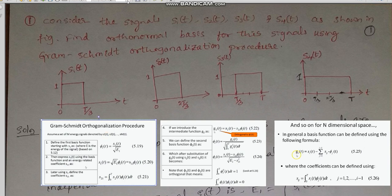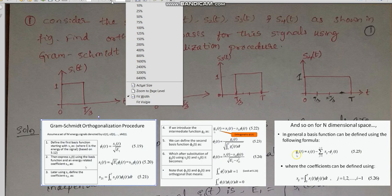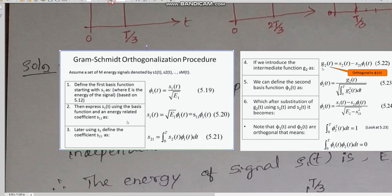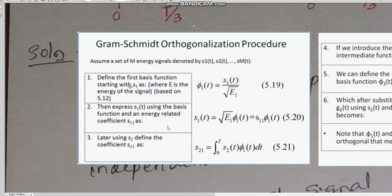Here are the steps. First, we define the first basis function phi1 which is given by S1 divided by square root of E1. Next, we will define the coefficient S1 of t in terms of basis function and our S11 will be square root of E1. That is the second step.